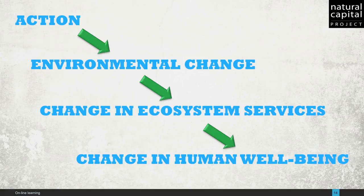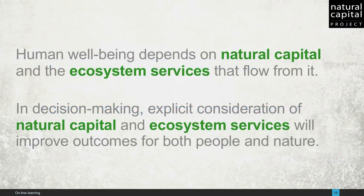Making that more general, beyond mangroves, the framework of natural capital and ecosystem services allows us to explore how actions might lead to environmental change, how those changes can lead to changes in the delivery of services, and ultimately to changes in human well-being. In closing, here are two sentences to try: Human well-being depends on natural capital and the ecosystem services that flow from it. In decision making, explicit consideration of natural capital and ecosystem services will improve outcomes for both people and nature.